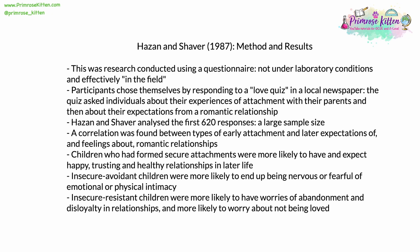They found that children who had formed secure attachments at a very early stage were more likely to have happy, trusting and healthy relationships in later life. Insecure avoidant children were more likely to end up nervous or fearful of emotional or physical intimacy. Insecure resistant children were more likely to have strong worries of abandonment and disloyalty in relationships — much more paranoid about people cheating on them or leaving them, and therefore more likely to worry about not being loved.